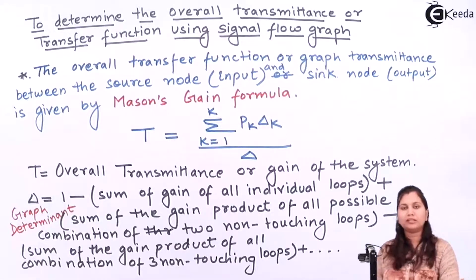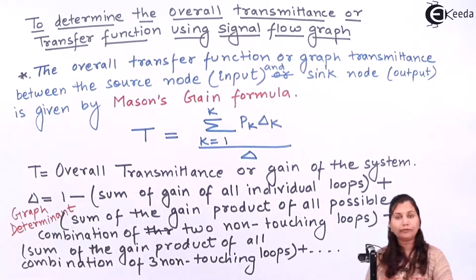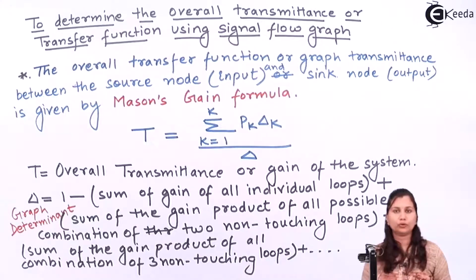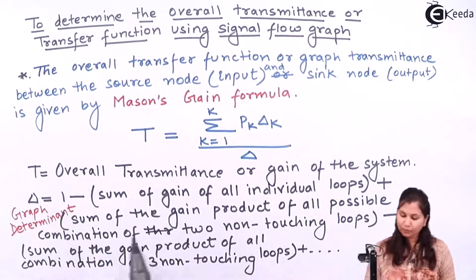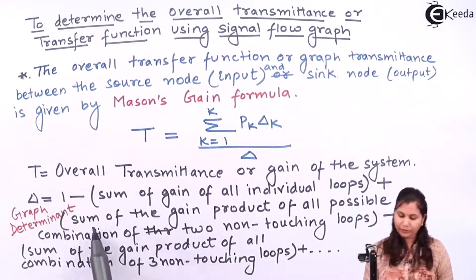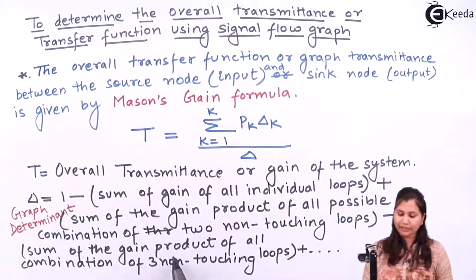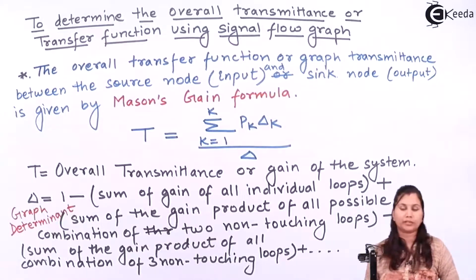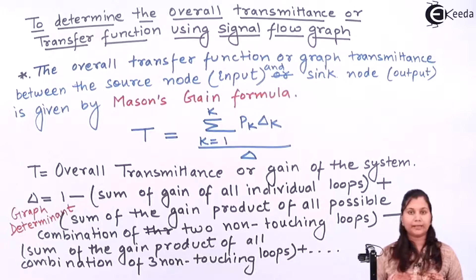Two non-touching loops means there are two loops that are not touching each other — they do not share any common node. You take pairs of loops which are not touching each other and take the sum of their gains. So in this bracket you take the sum of the gain product of all possible combinations of two non-touching loops. Then minus the sum of the gain product of all combinations of three non-touching loops — that is, three loops which are not touching each other.